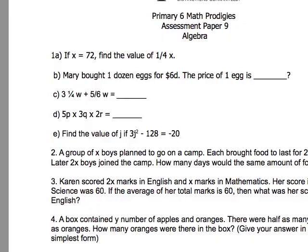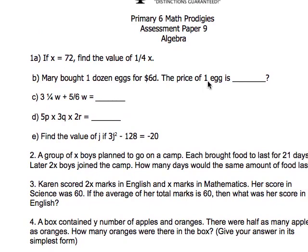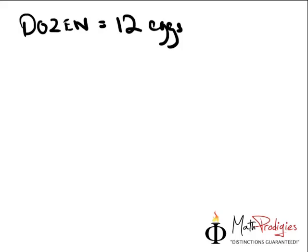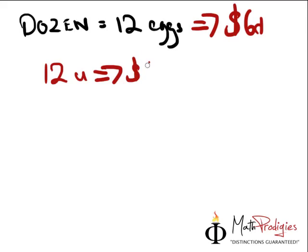Now for part B, let's take a look at the question. It says, Mary bought 1 dozen eggs for 6D dollars. The price of 1 egg is very simple. A dozen is equal to 12 eggs. And the question then tells you, Mary bought 1 dozen for 6D dollars. This is equal to 6D dollars. The question is asking you, find the price of 1 egg.